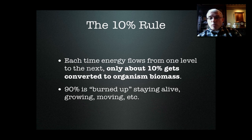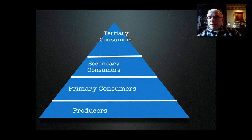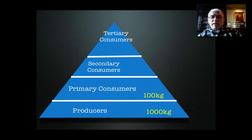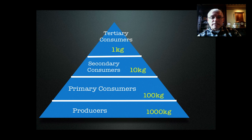Only about 10% of the energy gets passed up to the next level and converted to the biomass of organisms at that level. The easy way to see this is with numbers: imagine we have 1,000 kilograms of a producer — let's say corn plants — and we feed that corn to some primary consumers, let's say chickens. According to the 10% rule, we're only going to get about 100 kilograms of chicken meat from that 1,000 kilograms of corn. If we continue up, by the time you get to the apex predator at the top of the pyramid, only a very small fraction of the original energy in the ecosystem has made it that high.